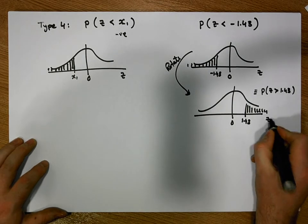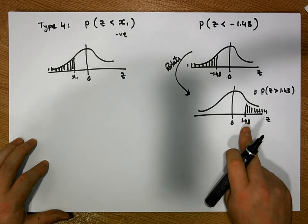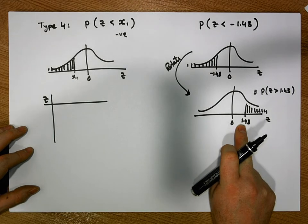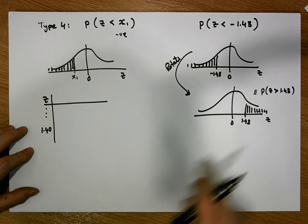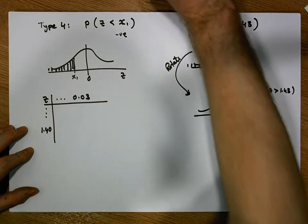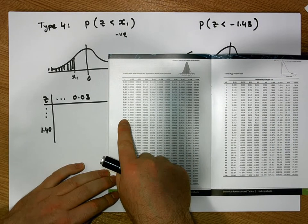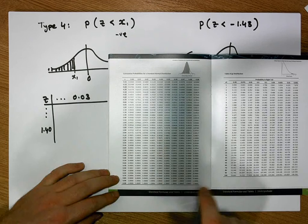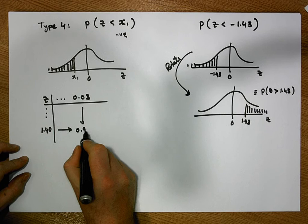In a previous video we dealt with the calculation of probabilities involving right-hand tail areas. Once we have a positive value, we look it up in our z tables. Our first significant digit and first decimal digit is 1.4, so we come down to 1.40, and our second decimal digit is 3, so we come across to 0.03. When I look up 1.4 in the first column and come across to the column labeled 0.03, we get a value of 0.9326.